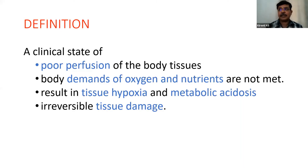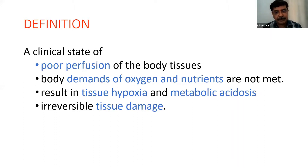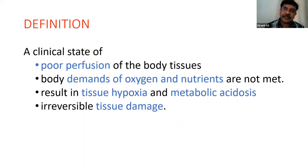Once there is tissue hypoxia, metabolism shifts to anaerobic — that is, metabolism occurs without oxygen. The end product of anaerobic metabolism is lactic acid, so lactic acid secretion increases and the child suffers metabolic acidosis. Prolonged metabolic acidosis causes irreversible tissue damage. So shock is a clinical state of poor tissue perfusion leading to tissue hypoxia, metabolic acidosis, and irreversible tissue damage.